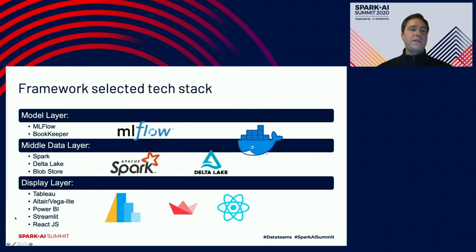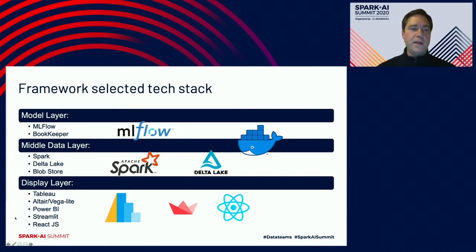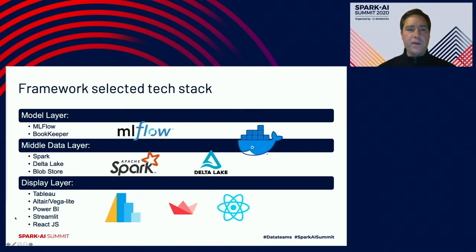Here are some of the technologies we use to implement this framework. Our model layer consists largely of MLflow, with some of our own code in the form of Bookkeeper. Our middle data layer is primarily comprised of Spark, Delta Lake, and Blobstore. And our display layer involves a number of elements, particularly in our prototype layers, including Tableau, Altera and Vega-Lite, Power BI, Streamlit, and React.js.